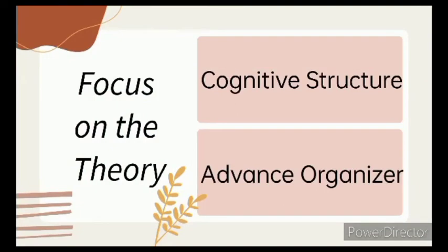Focus on Ausubel's Theory. The first one here is the Cognitive Structure and the Advance Organizer. What are these two?